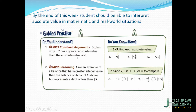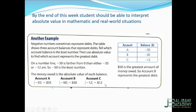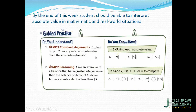The money owed is the absolute value of each balance: the absolute value of negative 35 is 35, negative 50 is 50, and negative 12 is 12. So 50 is the greatest amount of money owed, meaning account B has the greatest debt because it has the least value.